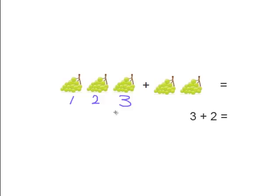So we have three bunches of grapes just like this three right here. Plus the last ones, one, two bunches of grapes. So these two match this two right here. So three bunches of grapes plus two more bunches of grapes equals five.